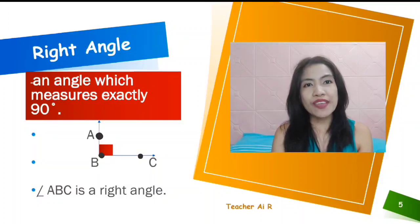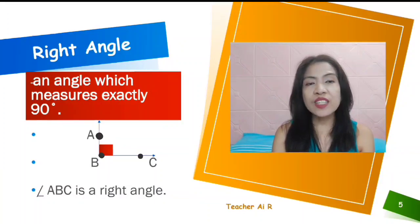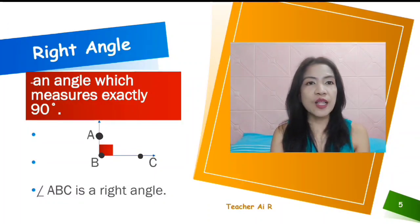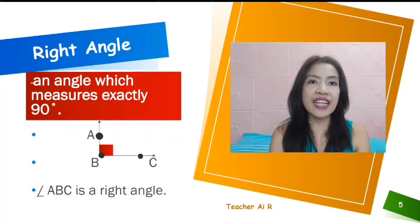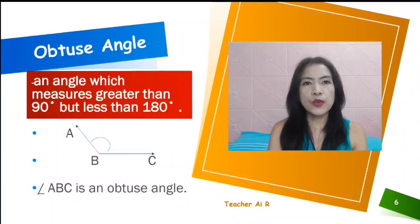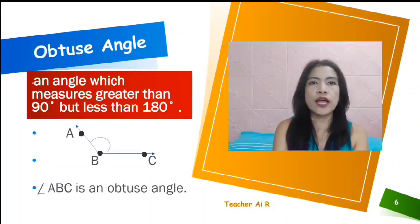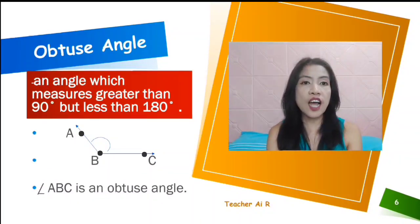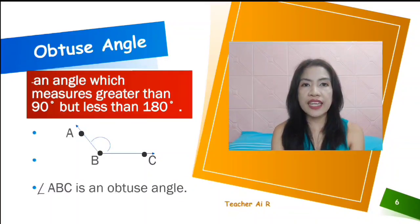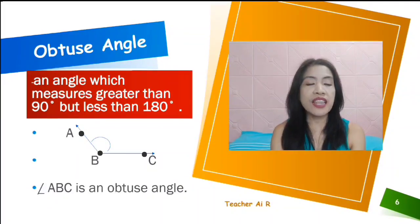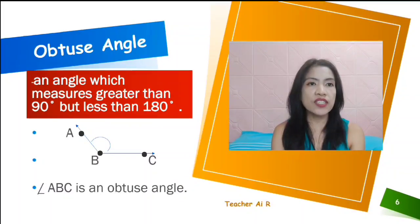Next, we have the right angle. It's an angle which measures exactly 90 degrees. Next, we have the obtuse angle. It's an angle which measures greater than 90 degrees but less than 180 degrees.